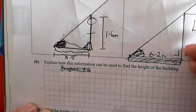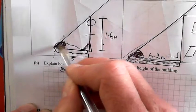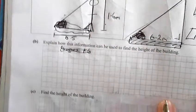But the sun is up here, so this angle is going to be the same here and here. The angle of elevation of the sun.